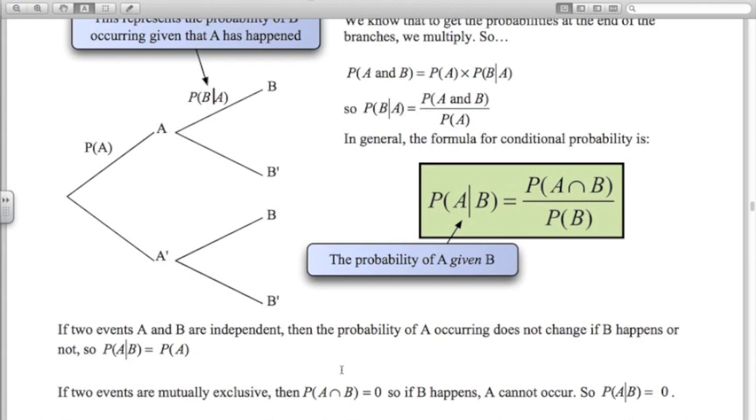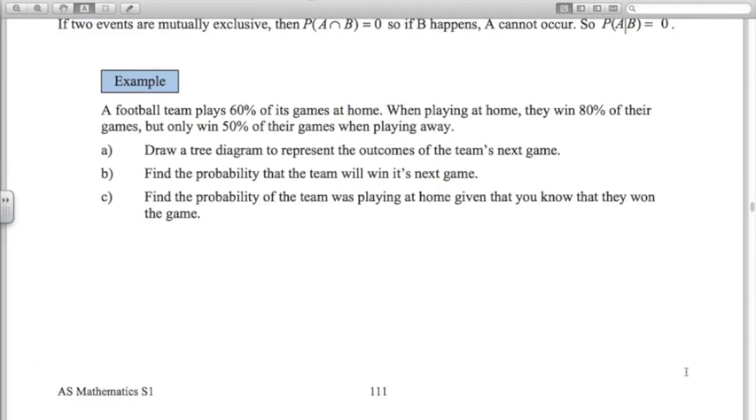Also, if you're looking at mutually exclusive events where the intersection is zero, if B happens, A can't happen. So the probability of A given B is zero if two events are mutually exclusive.